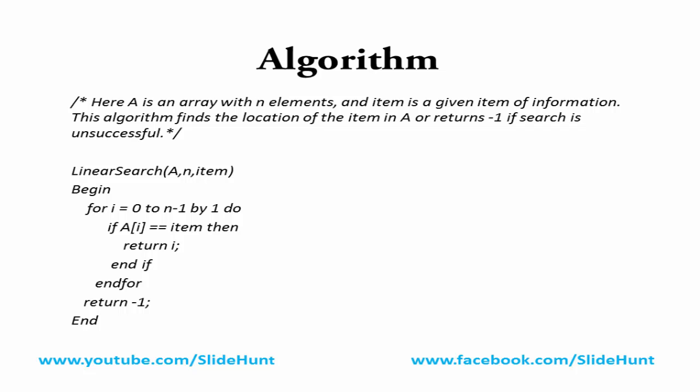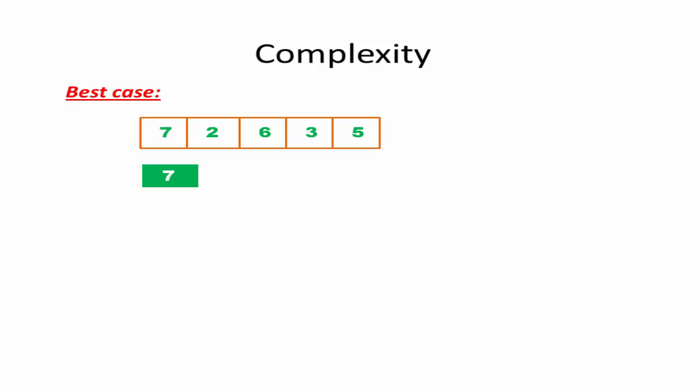Next we learn how to calculate the complexity of the linear search algorithm. Complexity is measured by the number of comparisons required to find the item in the array. In the best case the item is at the first position, so only one comparison is needed. For example, searching for 7 in an array where 7 is at index 0 — the match is found immediately. So the best case complexity is O(1).